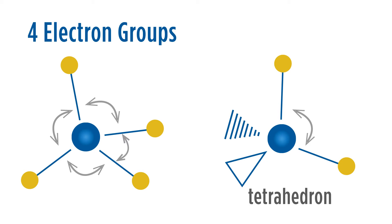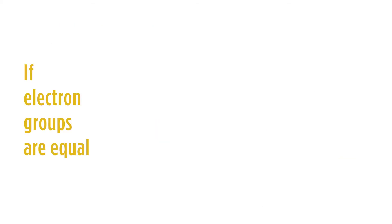This tetrahedron has a three-dimensional shape and repulsing as far as they can, they get to 109.5 degrees, assuming that all of our electron groups are identical. This is something we have to actually consider. If all of the electron groups are equal, then we will get these angles, 180, 120 degrees, and 109.5.